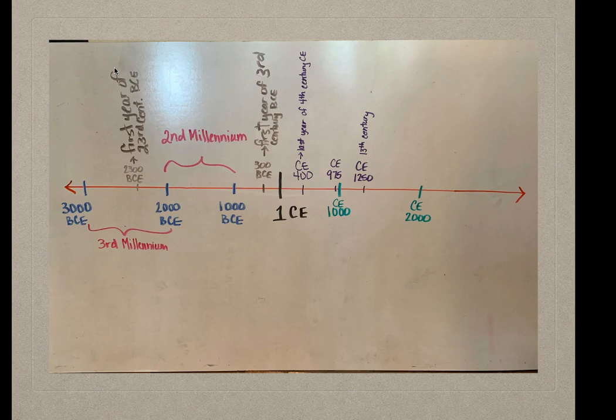Also, take note of how the centuries and millennia would be counted. 2300 BCE is in the third millennium and is the start of the 23rd century BCE. That's because, as the History Skills video taught us, the first year of a century labeled before 1 CE gives the century its name. So if you were looking at 500 BCE, that would be the beginning of the 5th century BCE.